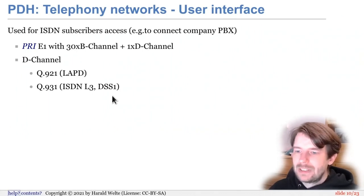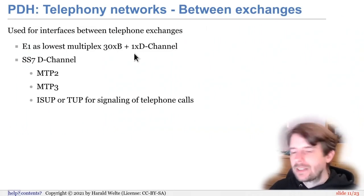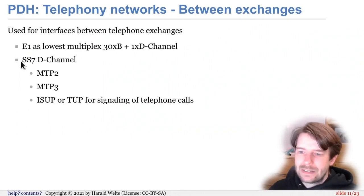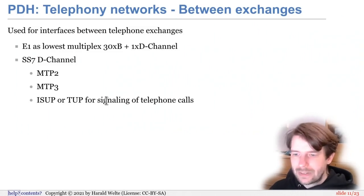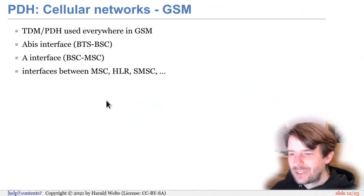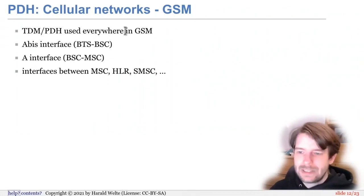The same physical E1 circuit, just with a different D channel protocol, was also used on other interfaces — for example, between telephone exchanges. The B channels are exactly the same, but the signaling channel uses Signaling System 7, which consists of MTP2 and MTP3. At higher levels, it was ISUP — the ISDN User Part — or TUP, the Telephony User Part, for signaling telephone calls between exchanges using the same E1 or multiple E1 circuits. In cellular networks, a lot of PDH technology is also used. Basically everything in GSM that's not the Um radio interface was specified over ISDN or PDH technology.